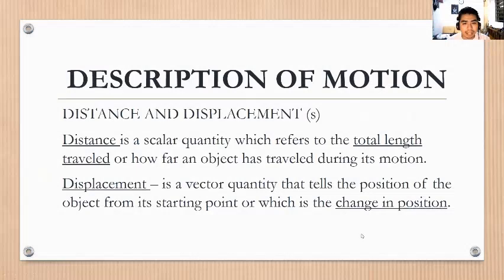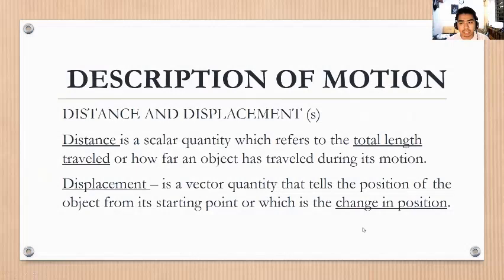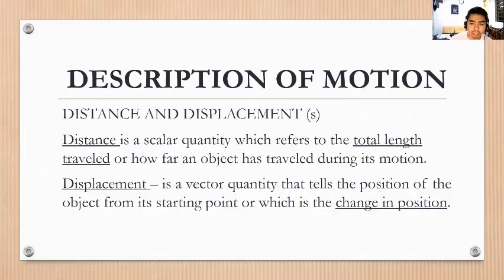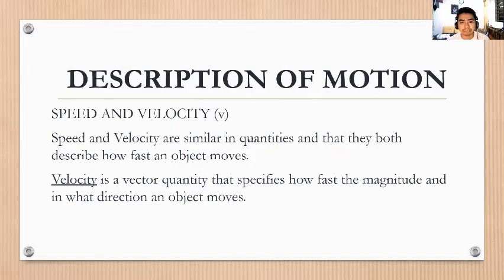Distance and displacement: Distance is a scalar quantity which refers to the total length traveled, or how far an object has traveled during its motion. Displacement is a vector quantity that tells the position of the object from its starting point — it is the change in position.